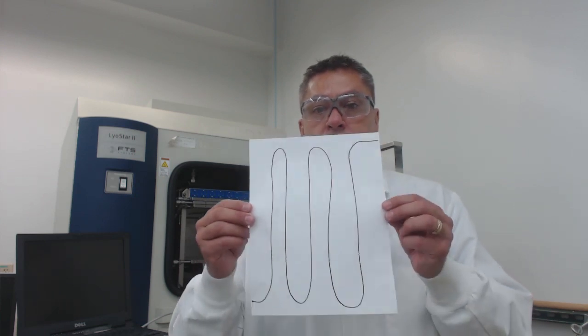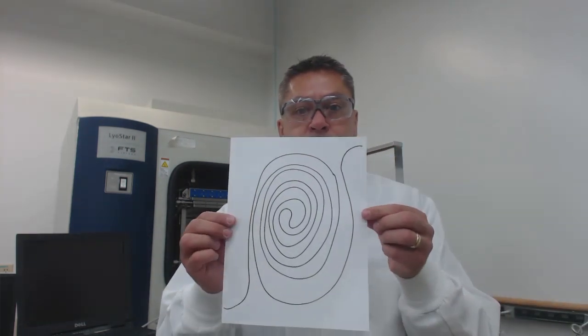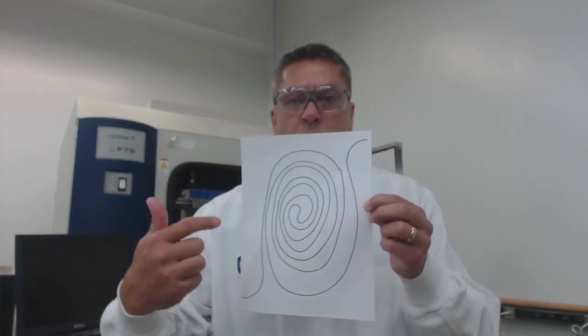Something else that we need to discuss is how do we cool these vials? Where does this cold temperature come from? Well, these shelves are hollow. They have a cooling fluid or heat transfer fluid that rotates and flows through them. Something else that is different between different lyophilizers is how that fluid flows. On some shelves, it flows in a serpentine pattern, up and down. Other shelves, it will flow in a spiral pattern.